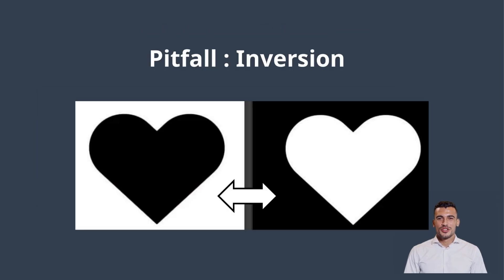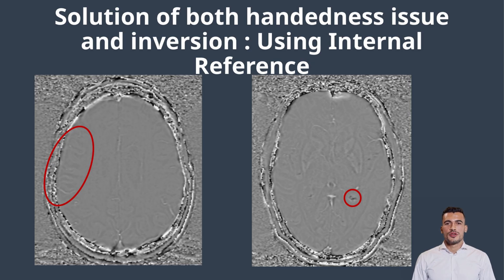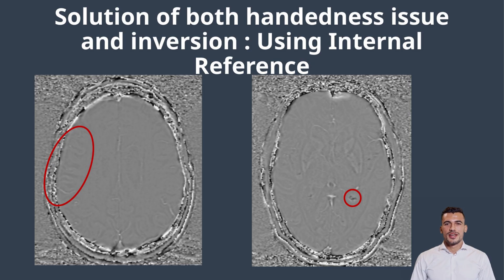Sometimes images may be inverted — white appearing as black and black as white — so diamagnetic substances like calcifications can appear dark even in right-handed systems, and vice versa. We must be careful interpreting such scans. However, there is a simple solution: choose an internal reference. It could be choroid plexus calcifications or pineal gland calcifications, which are both diamagnetic, and their color tells how diamagnetic substances appear. We can also choose dural venous sinuses or cortical veins as the internal reference, and their color tells us the expected appearance of paramagnetic substances like deoxygenated blood or iron.